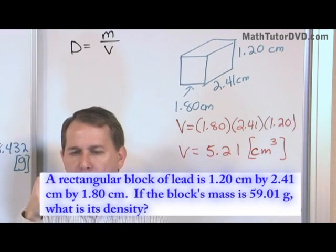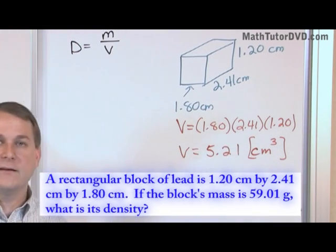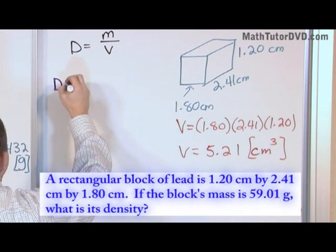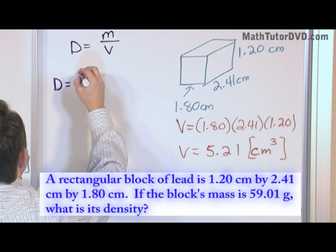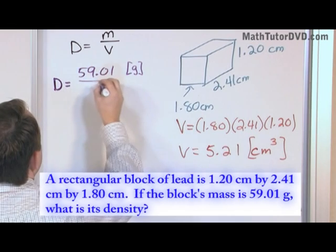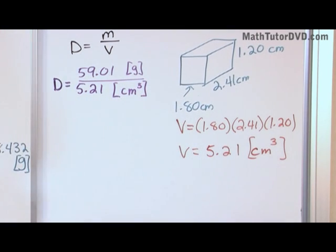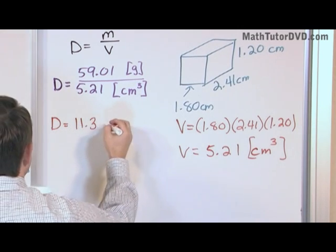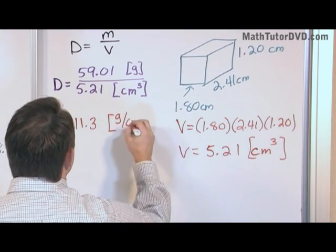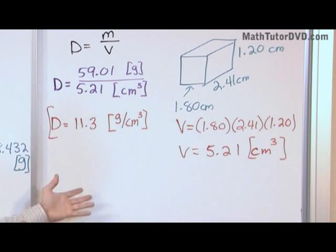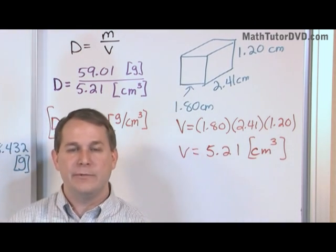That volume goes straight into the density formula. The mass was already given to us: 59.01 grams. The volume is what we just calculated: 5.21 cubic centimeters. So the density equals 59.01 divided by 5.21, which gives 11.3 grams per cubic centimeter. This means that if I take a cubic centimeter of this material and measure its mass, I'm going to get 11.3 grams.